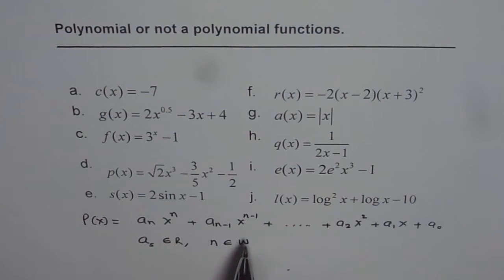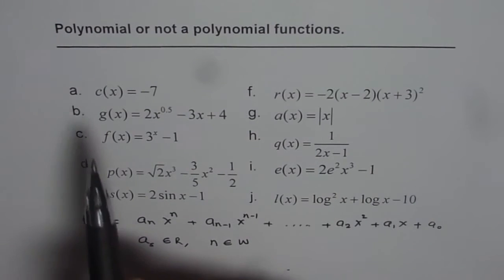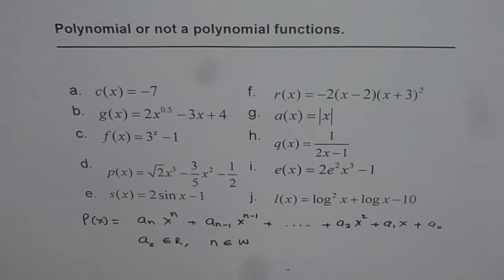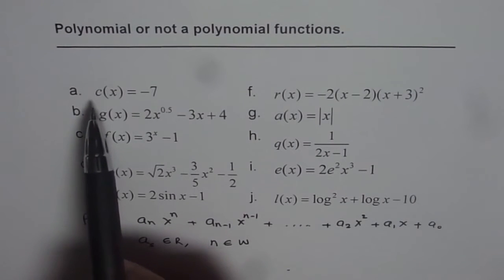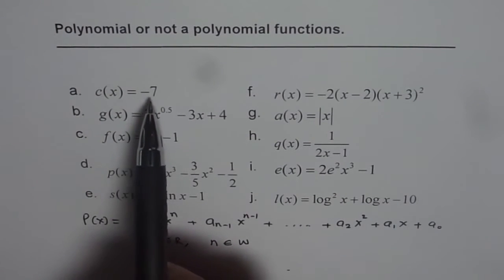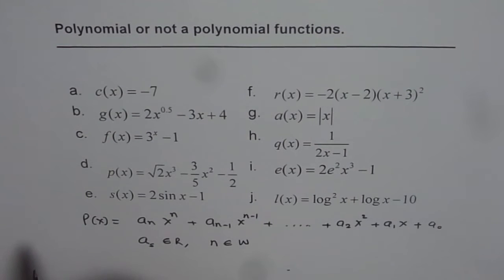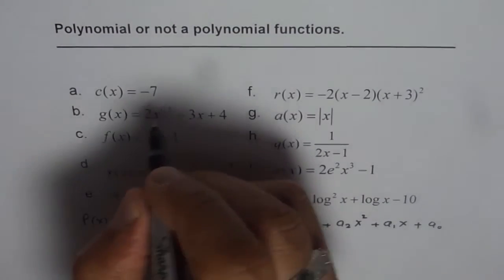Now based on this definition, we can figure out whether the given example is an example of polynomial function or not. Now let's examine them one by one. Is c of x equals to minus 7, is it a polynomial or not? Well if you go through the definition, it is like a constant where a₀ is minus 7. Actually it is a polynomial.